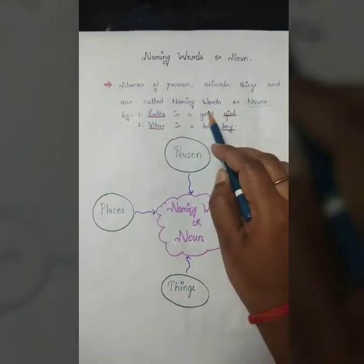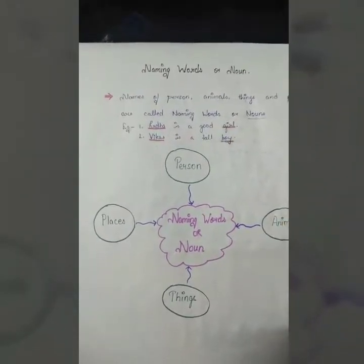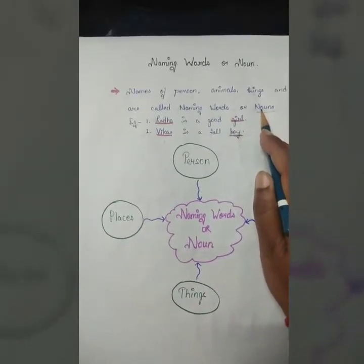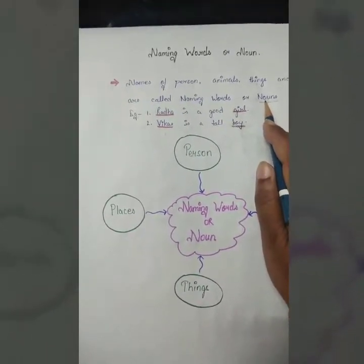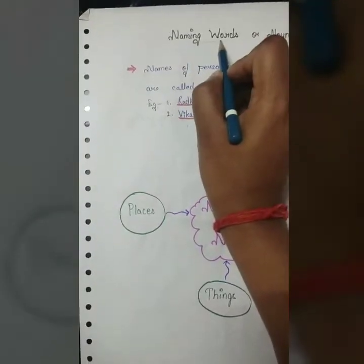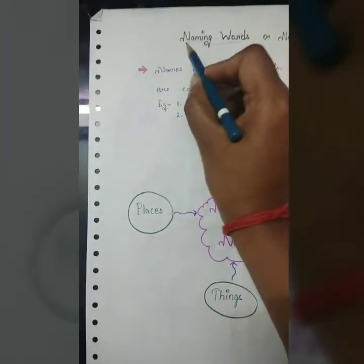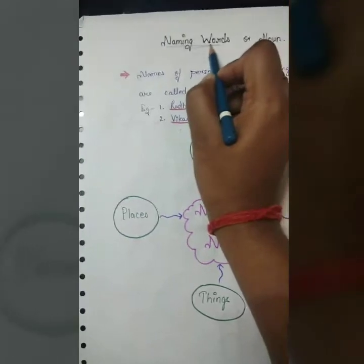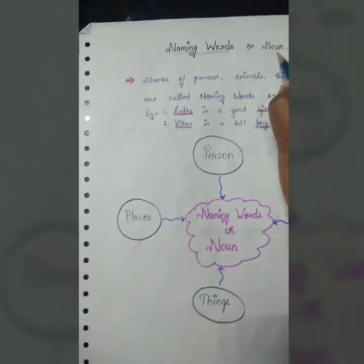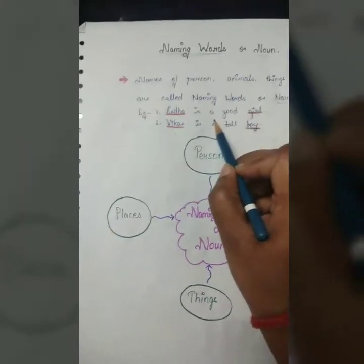So, simply you can understand by the word naming words. Naming ka matlab naam or word ka matlab word. So naming words, jis joh bhi jis ka naam hota hai, woh hi humara naming word hai ya noun hai. Now, better understanding we can get from this example.